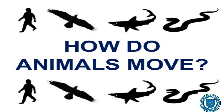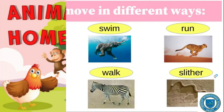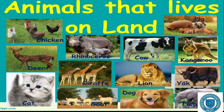Moving from one place to another: some animals have legs and some animals have wings to move from one place to another. Animals with legs can walk, and animals with wings can fly. There are other animals that do not have legs or wings — for example: snakes, fish, worms, and so on.